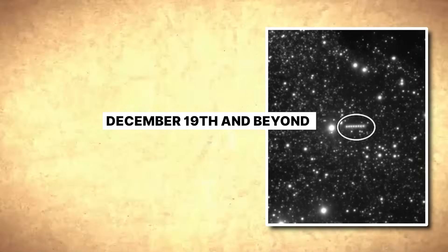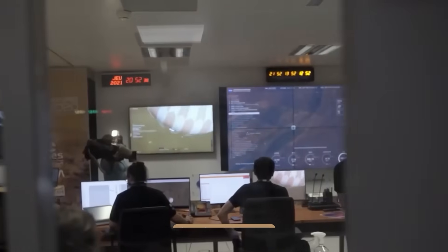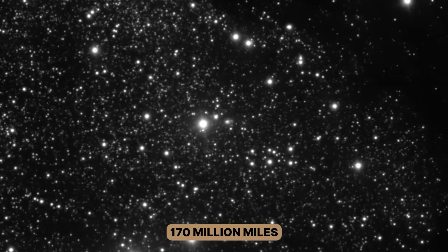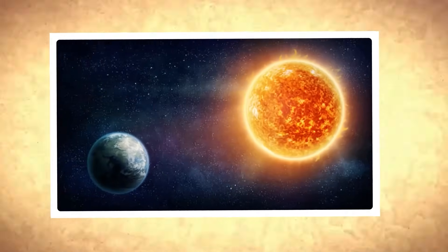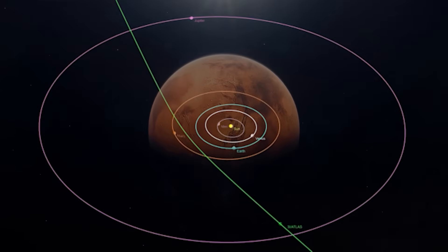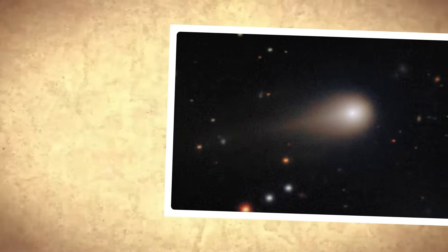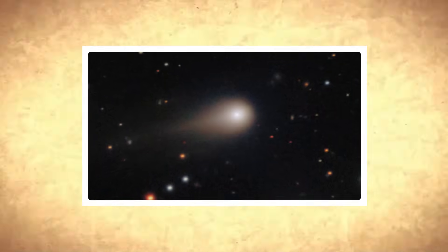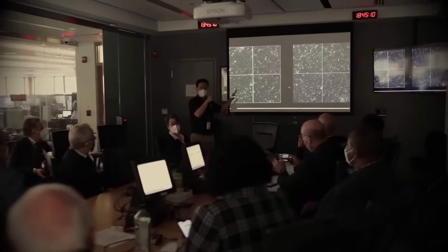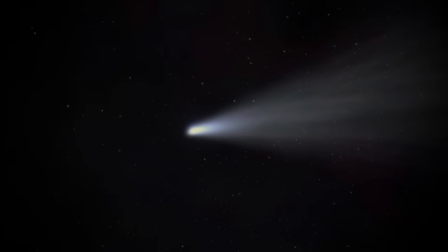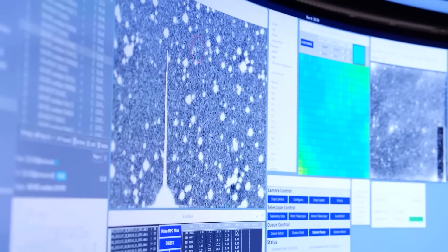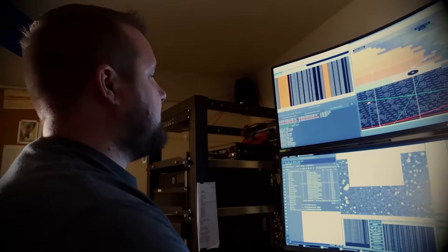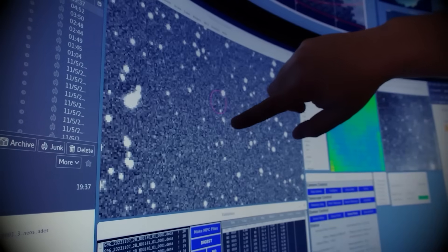December 19th and beyond. The big day is almost here. On December 19th, 3I Atlas will reach its closest approach to Earth, passing at a distance of roughly 170 million miles. That's about 1.8 times the distance between Earth and the Sun, which means there's absolutely zero danger to our planet. For reference, Mars at its closest gets only about 35 million miles from Earth, so this comet will remain safely distant. Still, that proximity gives astronomers a golden window for observation. The comet, now approaching Earth for its final close pass, should remain visible to moderate and large amateur telescopes through early 2026. It won't become a spectacular naked eye object like some historic comets, but dedicated observers with good equipment and dark skies should be able to spot it moving through the constellations Virgo and Leo in December before it gradually fades.